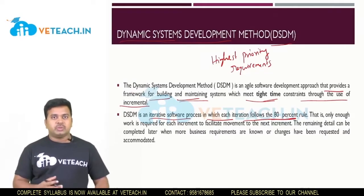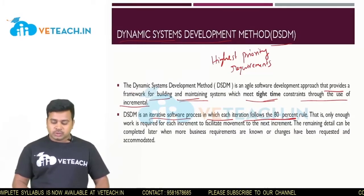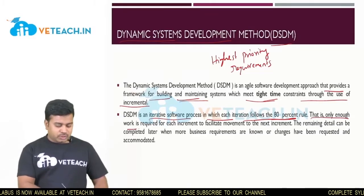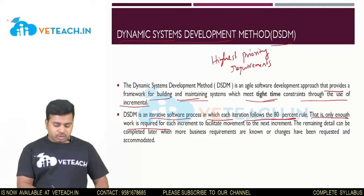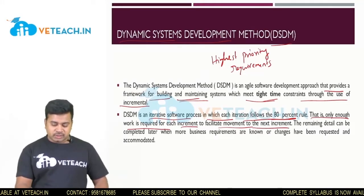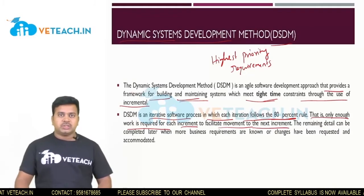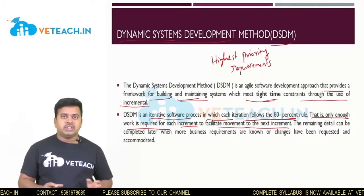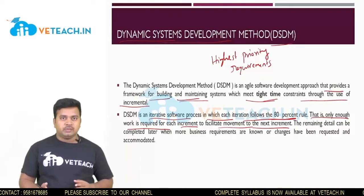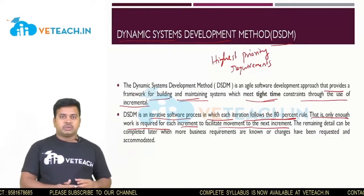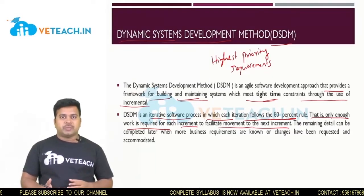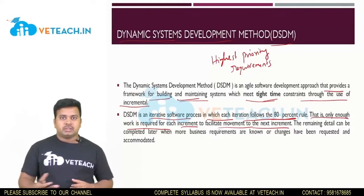What happens to the remaining 20%? Only enough work is required for each increment to facilitate movement to the next increment, because it is an increment, not the final product. So 80% of the work is more than enough. That work is delivered to the customer, the customer does testing, and if happy, gives feedback.